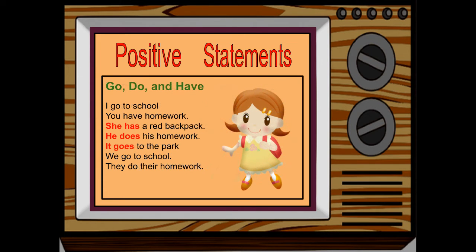Three verbs to keep an eye on are go, do, and have — they are not regular. For example: I go to school; you have homework; she has a red backpack; he does his homework; it goes to the park; we go to school; they do their homework. We're going to talk more about the verb do soon.